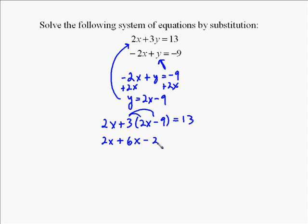Now we need to simplify to solve for x, so we're going to use the distributive property. So we multiply 3 times 2x to get 6x, and 3 times negative 9 to get negative 27. Now we have to add up the left side. We're still not done simplifying yet, so we needed to add up 2x and 6x to get 8x minus 27 equals 13.